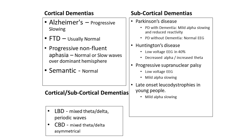With Alzheimer's, we see progressive slowing and can see quite a progression on serial EEGs. But interestingly, you can also have normal EEGs, particularly for the frontotemporal dementias — semantic and so on. And the subcortical dementias' patterns don't really hold. Having said all of that, it's still a useful framework for thinking about EEG patterns and feeding back to referring clinicians.